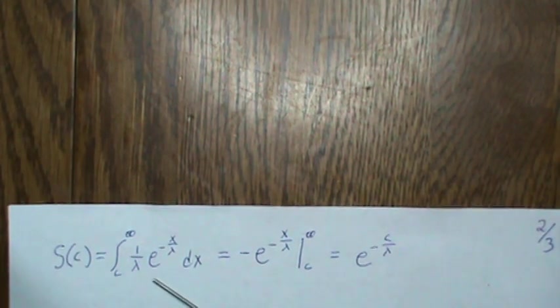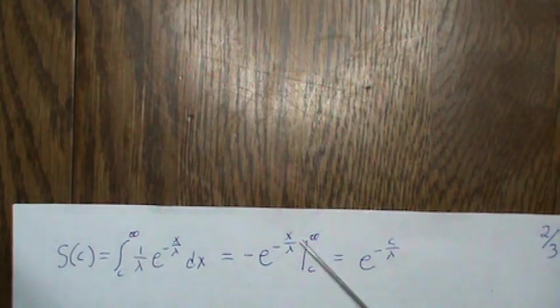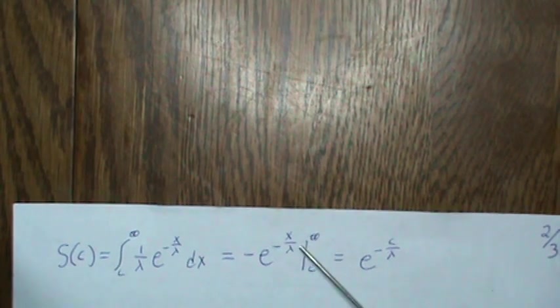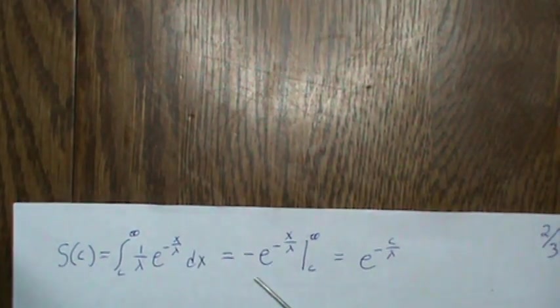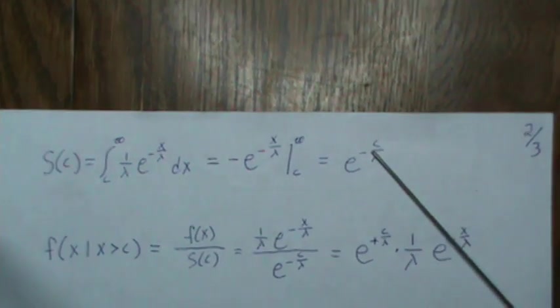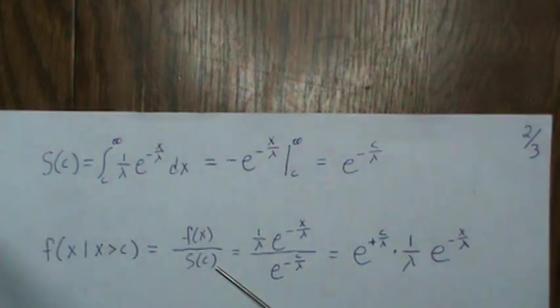That is this, I use S(C) which really means one minus F of C and it's the probability of being greater than C. Here's our exponential distribution, we simply use substitution, we get this, here's our limit to integrate, when we plug in infinity this goes to zero and then C we get this.